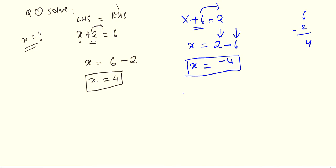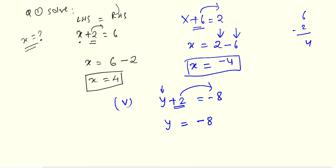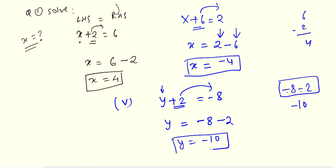You can solve questions 3 and 4 on your own. For question number 5: y plus 2 equals to minus 8. We have to find y. Transposing plus 2 to the right hand side, it becomes minus 2. So y equals to minus 8 minus 2. Since minus and minus add together, the answer is minus 10. So y equals to minus 10.